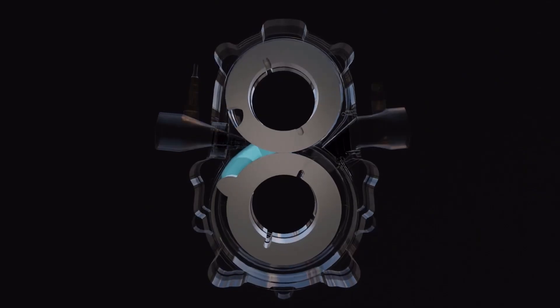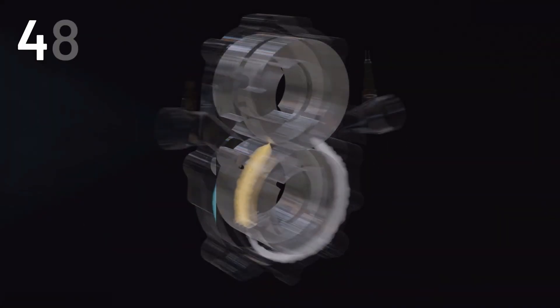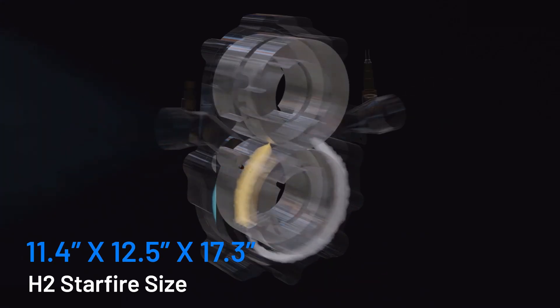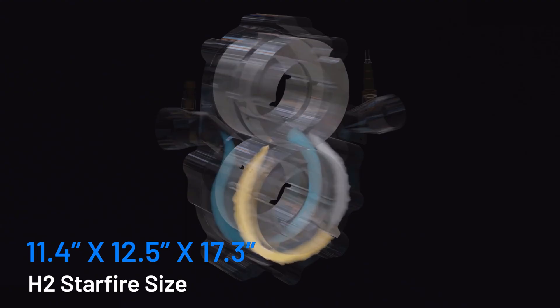A single H2 engine weighs 120 pounds, produces 400 horsepower and 500 pound-feet of torque. It also measures at a Hobbit-sized 11.4 by 12.5 by 17.3 inches, small enough to fit into a Japanese K-car while making as much horsepower as a 2024 Nissan Z.